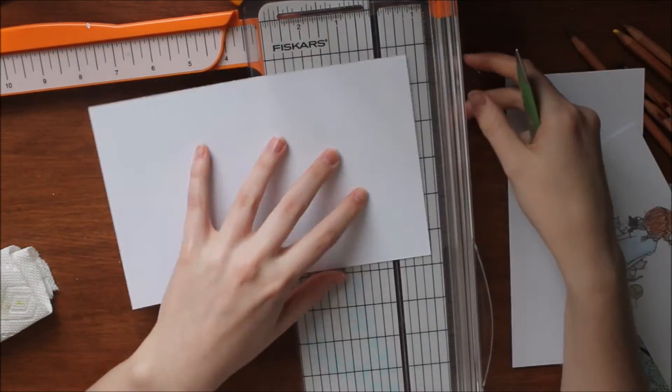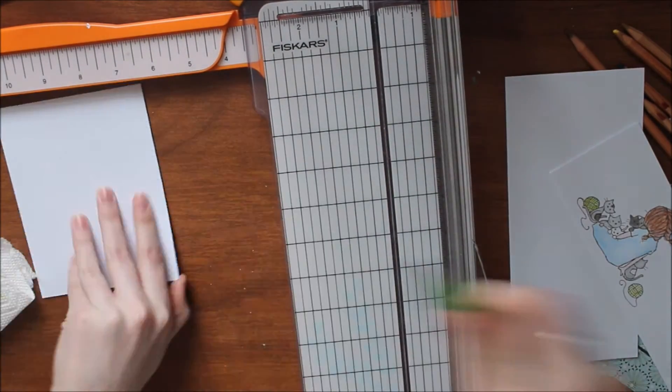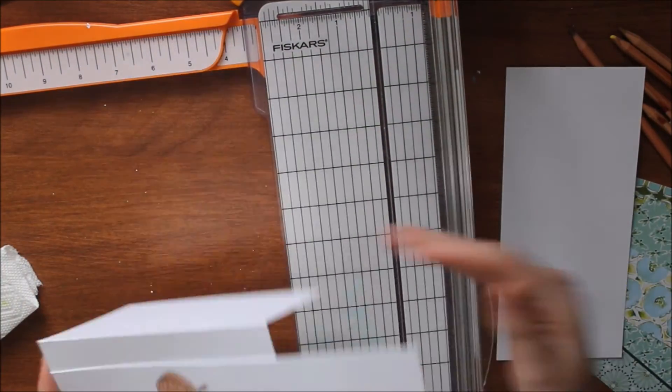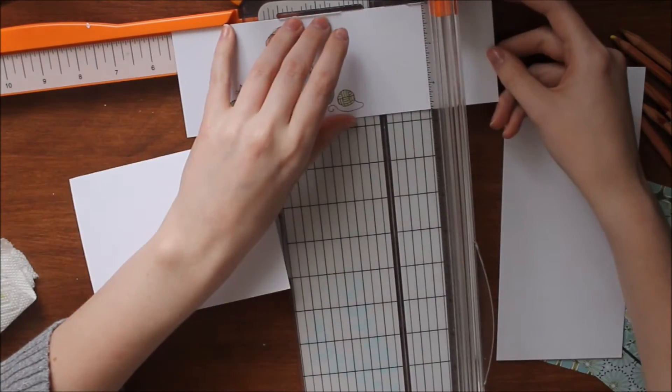I'm getting my card base ready. This is 110-pound cardstock and I'm scoring at five and a half or four and a quarter and it's five and a half wide. I'm going to cut my image to five and a half. This is a very simple card.